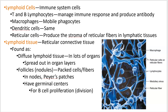Hello and welcome to screencast 2 of the lymphatic system. We're moving on to the cells, tissues, and organs. Here are some of the immune system cells associated with the lymphatic system. You've seen some of these already — T cells and B cells. These are types of lymphocyte, which we'll detail more in the next chapter.